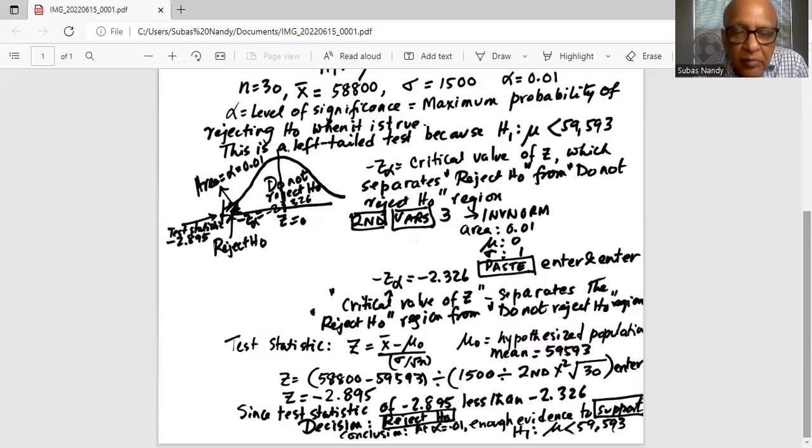This means the sample mean $58,800 is located below the population mean, hypothesis population mean of $59,593 by 2.895 times the standard error. Why below? Because the sign is negative of Z.